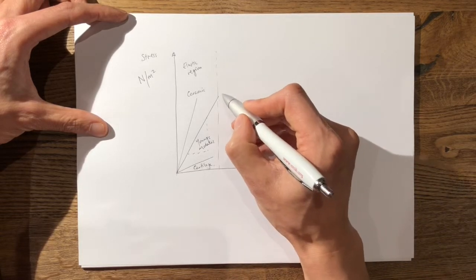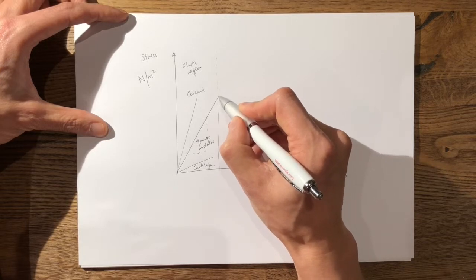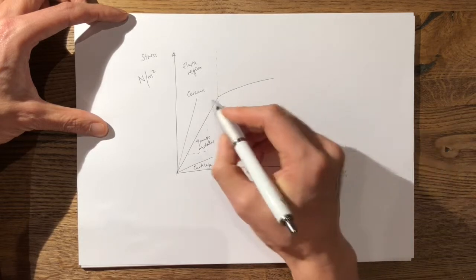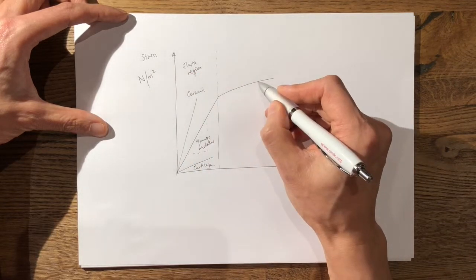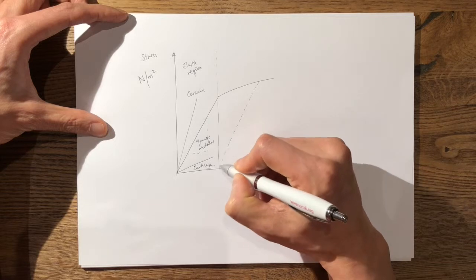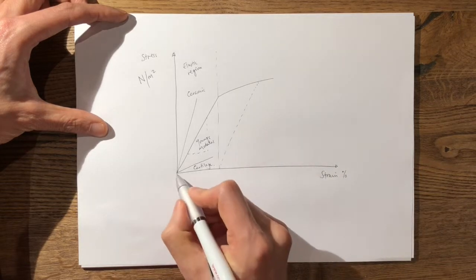Beyond this point here you enter the plastic portion of the curve. In this portion of the curve if you remove the stress it follows a parallel path back down.